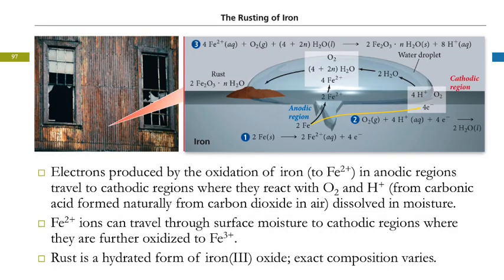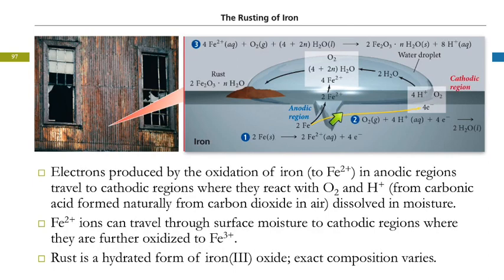So what's going on with the rusting of iron? Here we've got a picture of a building and you can see the rust on there. Rust typically begins at some kind of a defect in the metal — it can occur anywhere, but it'll typically start at a defect. Here we've got iron being oxidized to Fe2+, and this is called an anodic region because that's where the oxidation is occurring. There are anodes and cathodes. The electrons released travel through the metal or through moisture to a cathodic region where they react with oxygen and hydrogen ions.